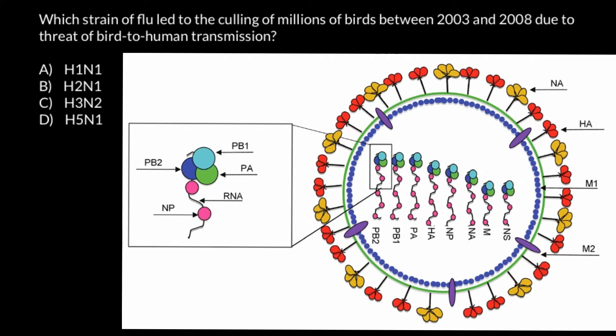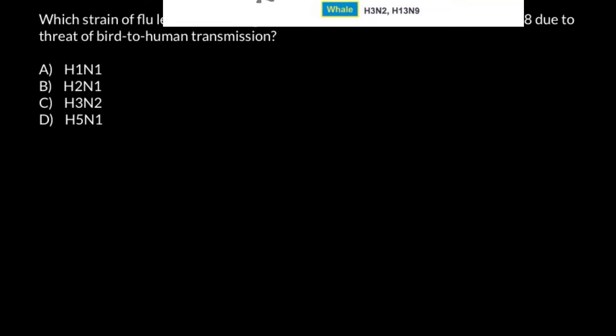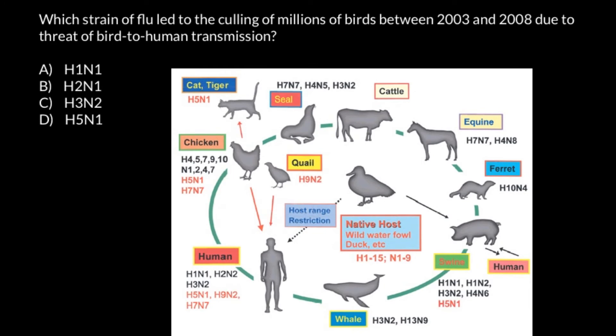Now let's return to our problem. This picture is also going to help us answer our question. As you see, most of the variation of these two surface proteins we can find in wild birds.